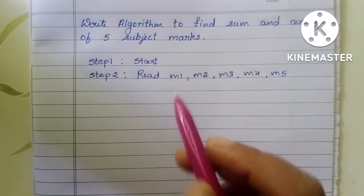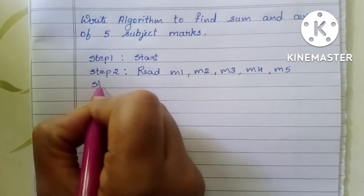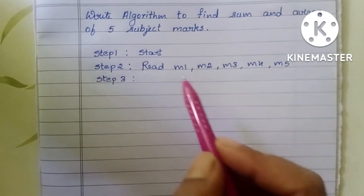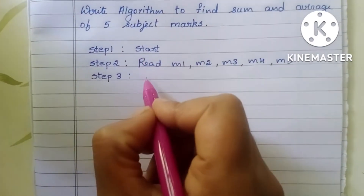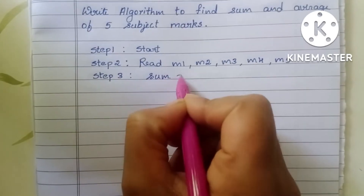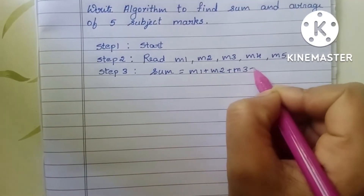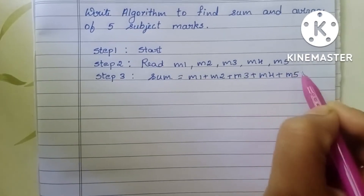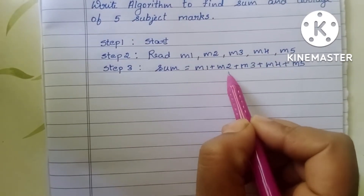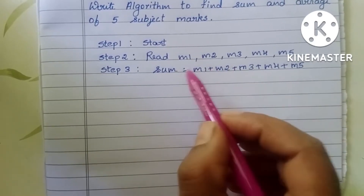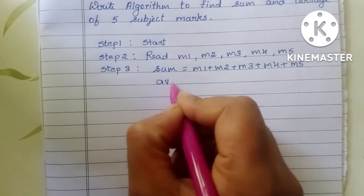Here m1, m2, m3, m4, m5 are the five subject marks. In step three we start the process. We have to find the sum, so we add all five subject marks: sum is equal to m1 plus m2 plus m3 plus m4 plus m5. This is the summation of five subject marks.